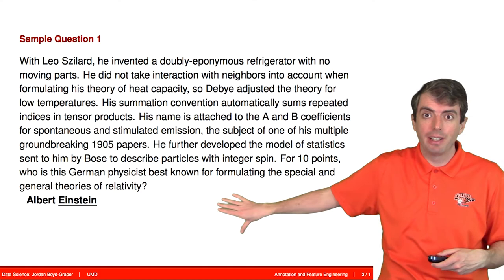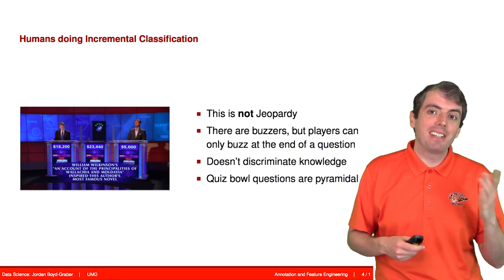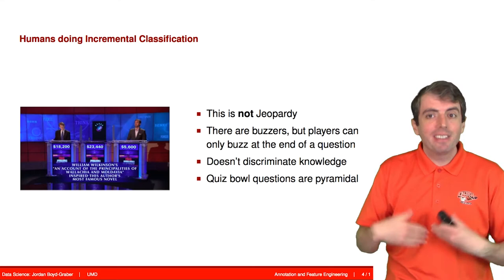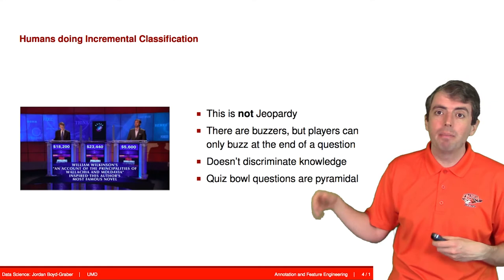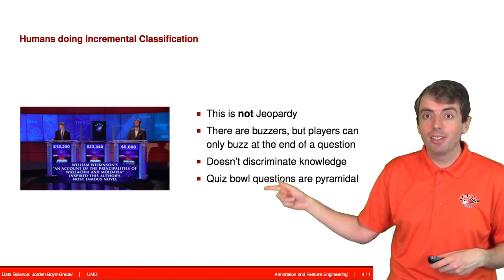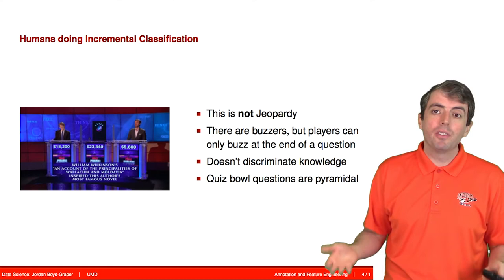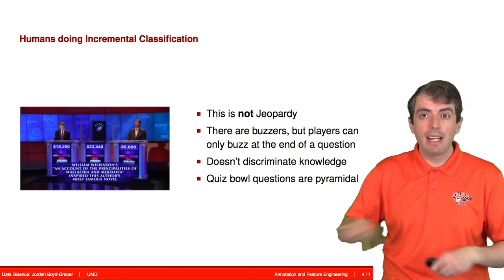One thing that I often have to talk about is how this is not Jeopardy. And so in Jeopardy, people can only buzz at the end of the question. The reason that I use Quiz Bowl in my research is that Quiz Bowl is the better, in my opinion, trivia game because it does a better job of distinguishing who knows more about a topic. And so when Watson took on two very smart humans at Jeopardy, they had to play by the rules of Jeopardy. And in Jeopardy, you can only answer the question at the very end. And if you answer before that, you get locked out.